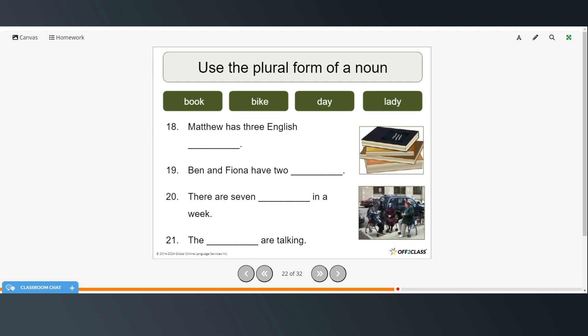Alright, so now you want to use the plural form of a noun in these sentences. So go ahead and try those on your own and restart the video when you're ready to check. Alright, so Matthew has three English books. Ben and Fiona have two bikes. There are seven days in a week. And the ladies, L-A-D-I-E-S, are talking.